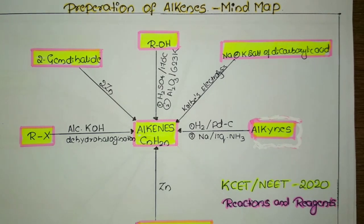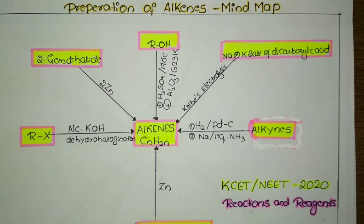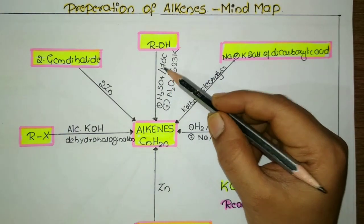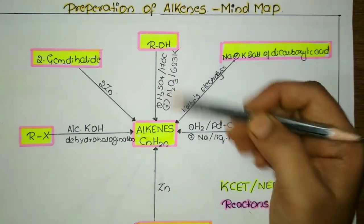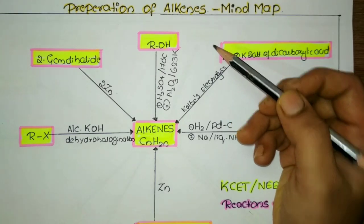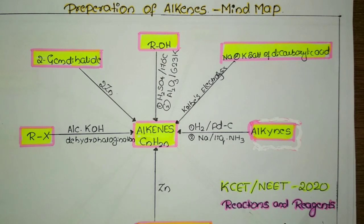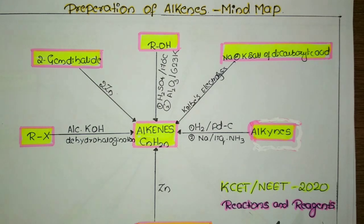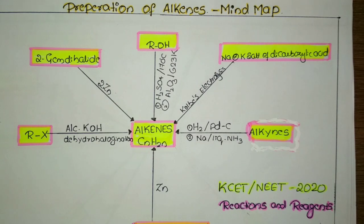This video is about the continued part of a mind map through which we can remember reactions and reagents in an easy way. When questions are asked in your competitive exam, you can apply these methods if you remember these reagents properly, then you can decide what product you will get. We have already completed alkanes, its preparation and reactions, and in this video I will complete the preparation of alkenes and their reactions, as well as the preparation of alkynes and their reactions.